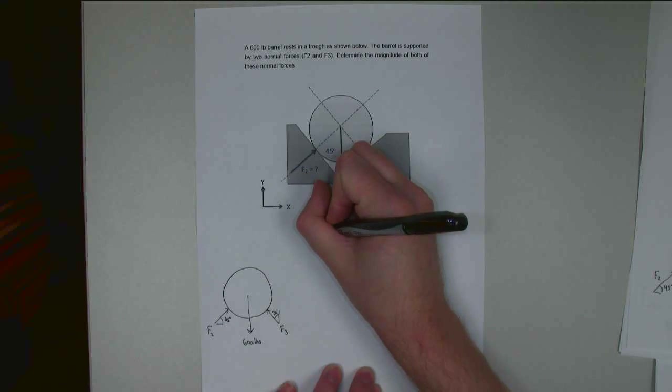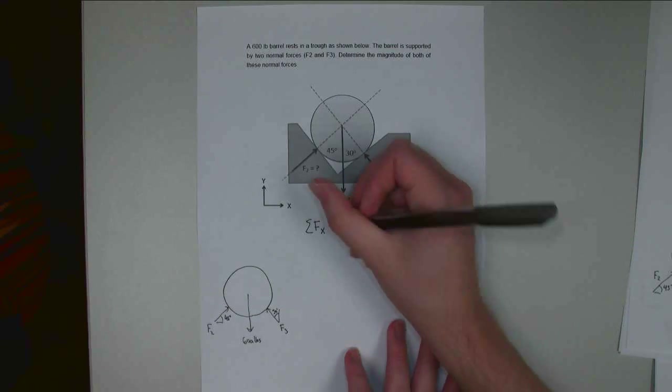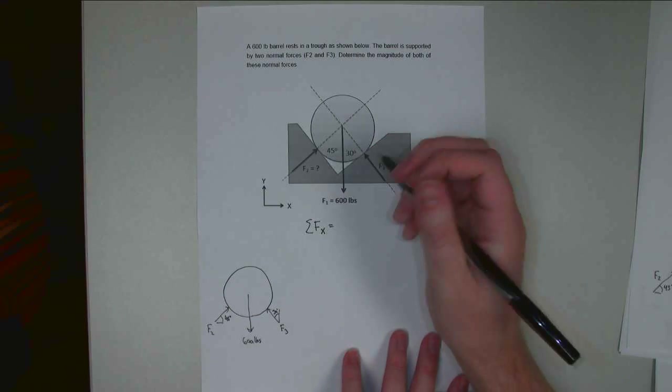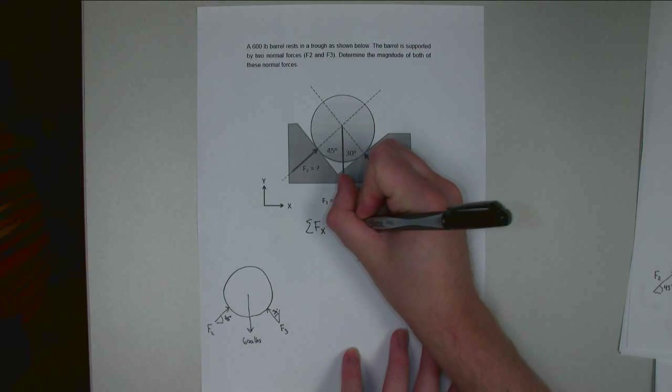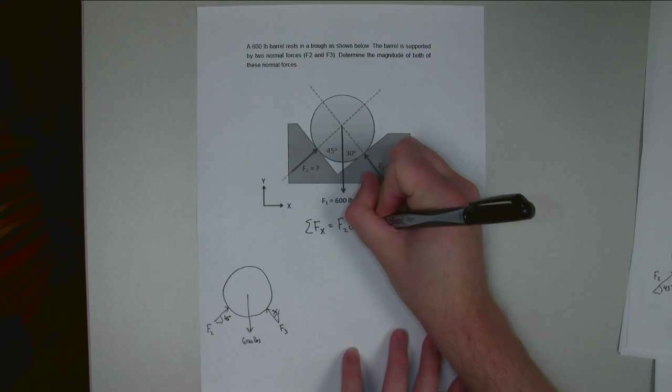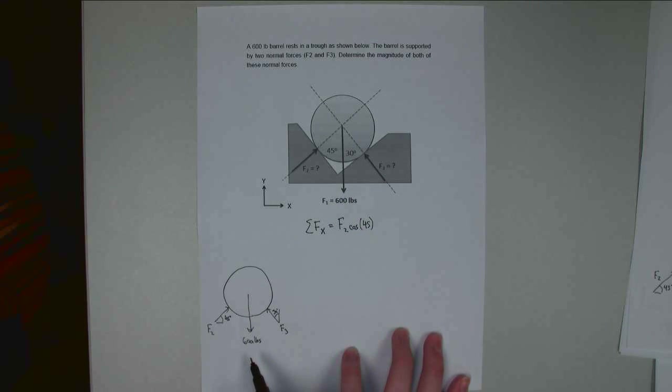And so sum of forces in the x direction, I'm going to take all the x components of the forces. And so that is F2 times the cosine of 45. The gravity force does not have any x component.